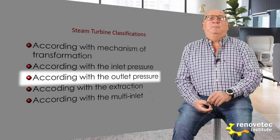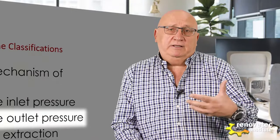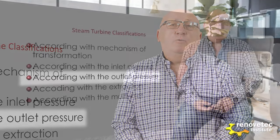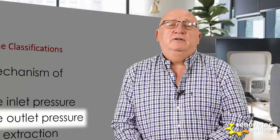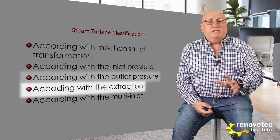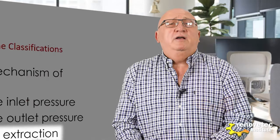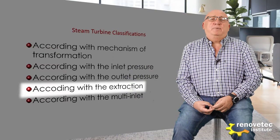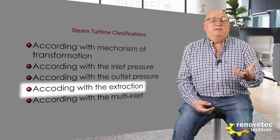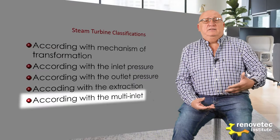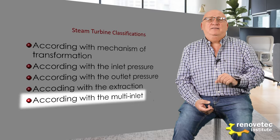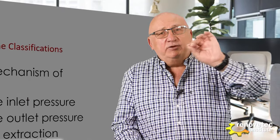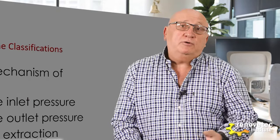The third classification is according to the outlet pressure. We have two types of turbines: back pressure turbine, where the pressure at the outlet is more than one bar, and condensing turbines, where the pressure is under one bar. According to the possibility to have an extraction, we have turbines with extraction and turbines without extraction. Extraction means the possibility to extract some part of the steam flow to use for another purpose. According to the possibility to have multi-inlet, we divide turbines between those that have an intermediate inlet in the flow path and those that do not.